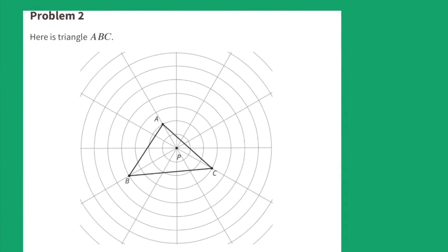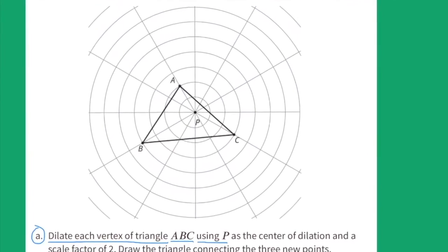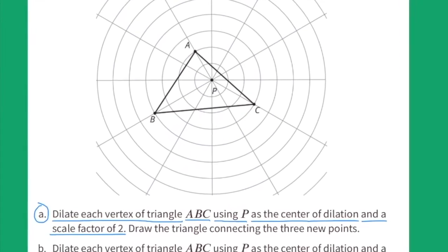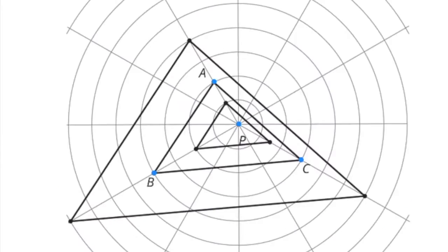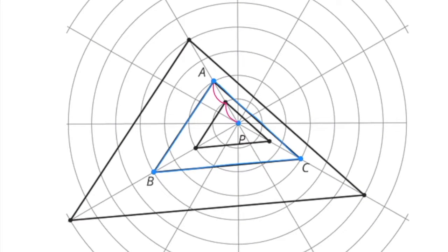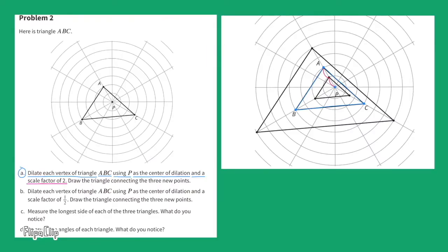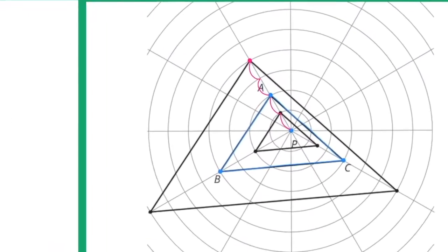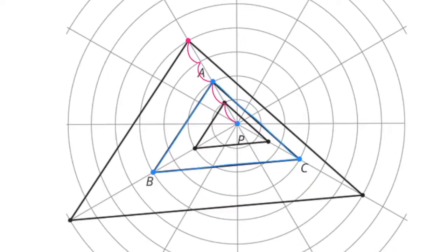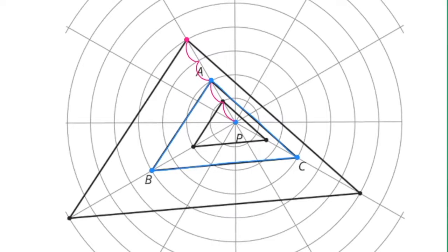Problem number two. Here is triangle ABC. Part A: Dilate each vertex of triangle ABC using P as the center of dilation and a scale factor of two. First I'll trace triangle ABC in blue. You can see that P represents the center of dilation. I can count how far away point A is from the center of dilation. Point A is a total of two units away from point P. Since the scale factor is two, I need to multiply two times two to find the new location of point A. Follow the ray from center point P straight through A and count four units — that will be the new location of point A after the dilation.